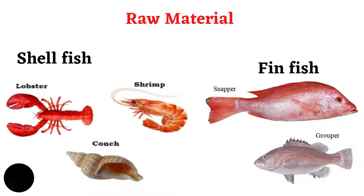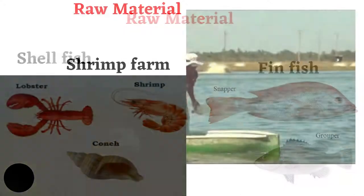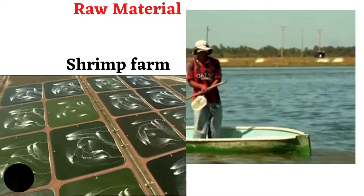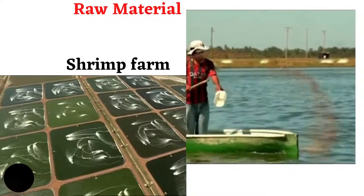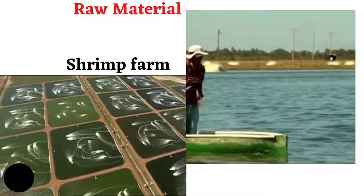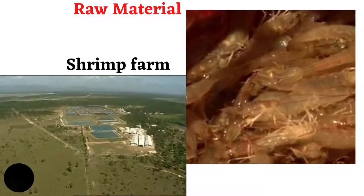The raw material for this industry is shellfish as well as finfish, which are harvested both on fish farms as well as fishing grounds. Lobster, conch, and shrimp are Belize's most lucrative seafood exports. Traditionally, snappers and groupers are the base of the finfish export industry. Shrimp catches have been overtaken by aquaculture, and now shrimp is the main fish reared in Belize.